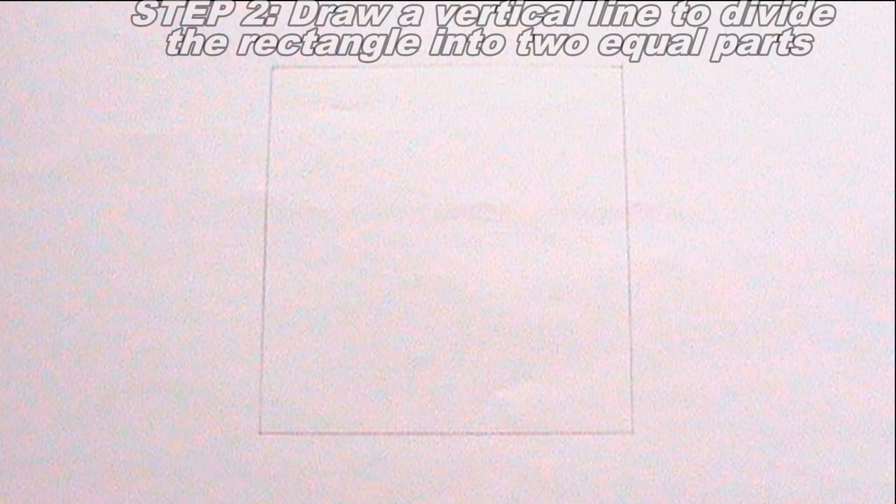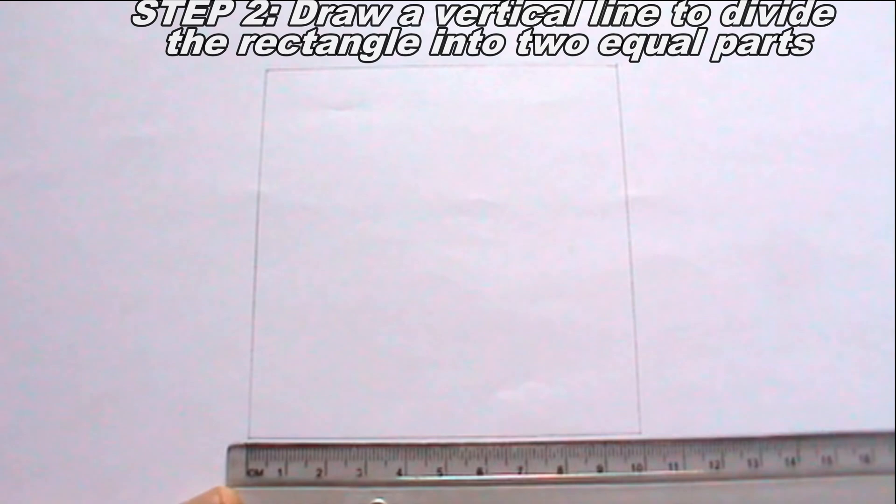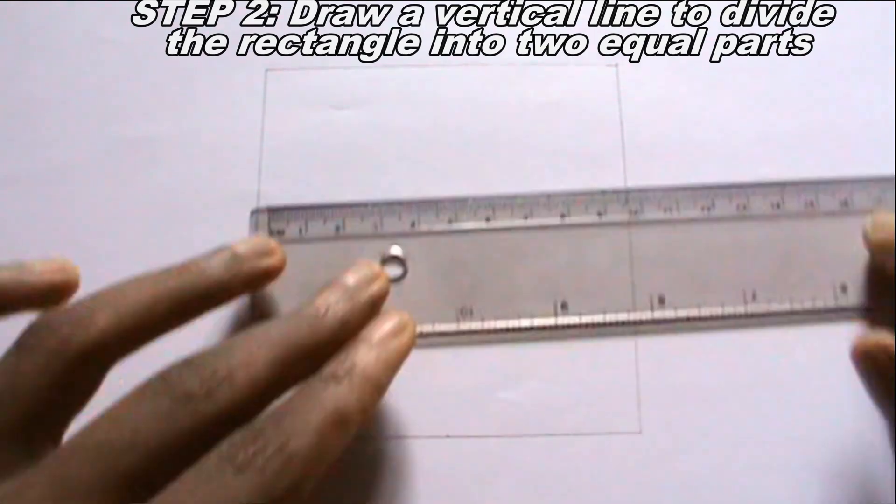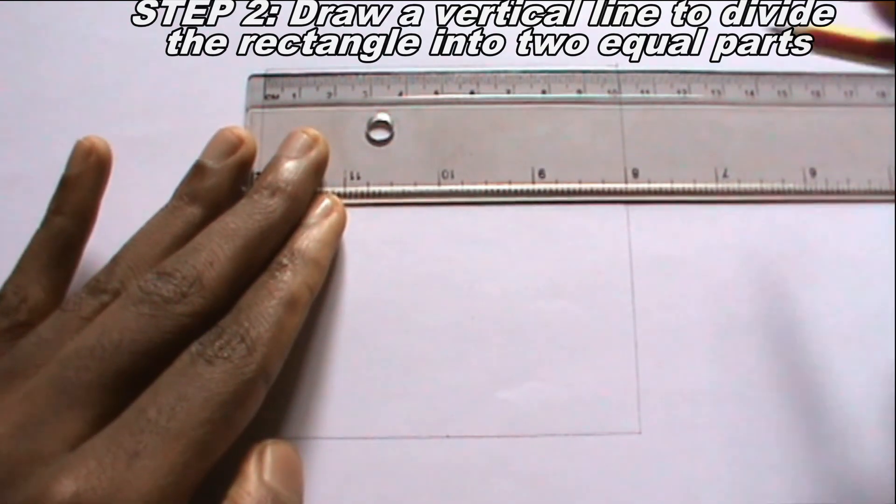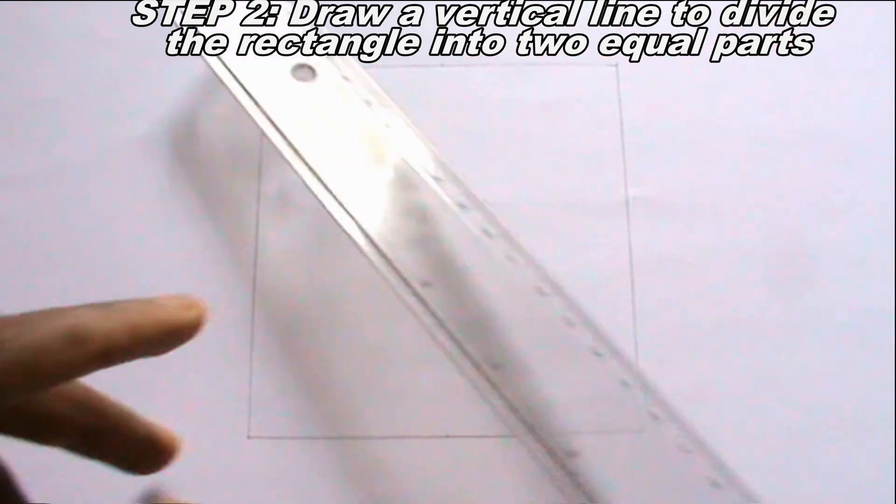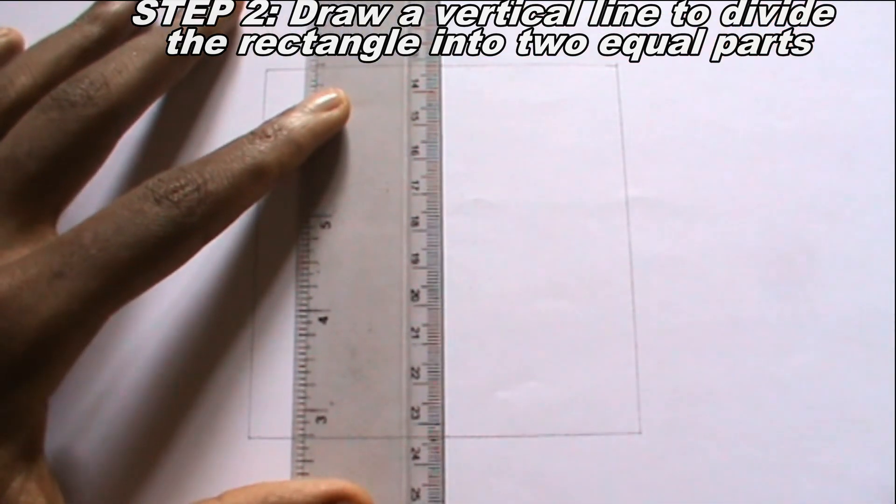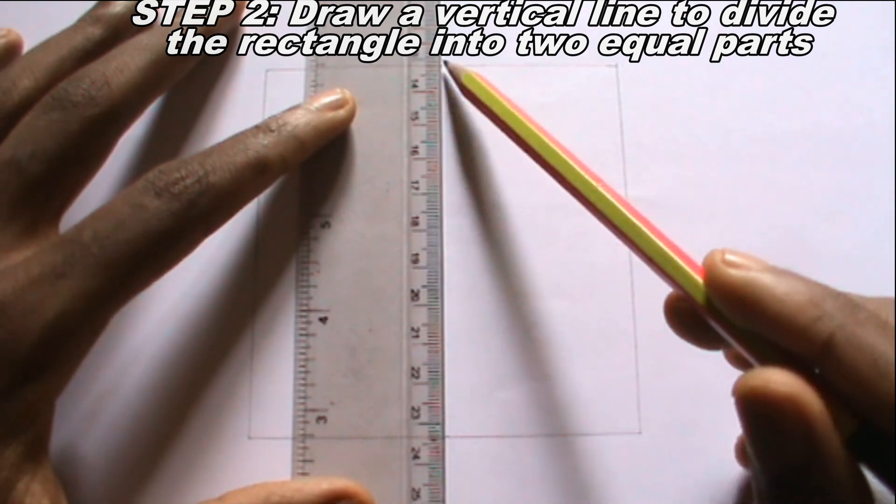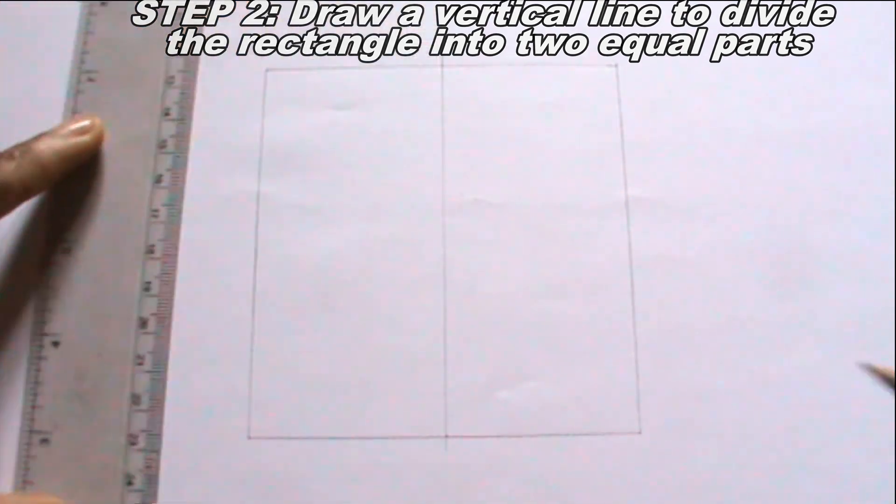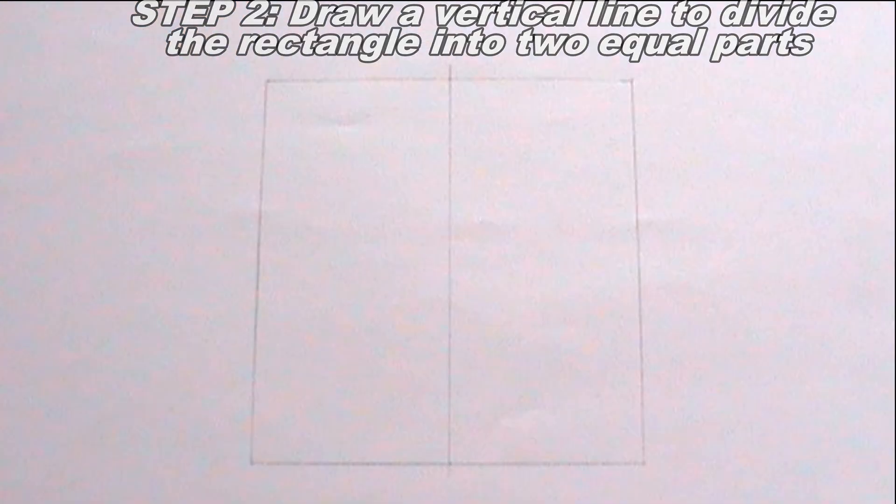I drew a square because I want the height and base of my parabola to be equal in length. The next thing I will do is to draw a vertical line to divide the rectangle into two equal parts. This step can be done this way.